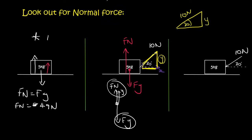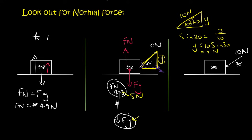We're looking for y. Using SOHCAHTOA, y is opposite and 10 is the hypotenuse, so we use sine. Sin 30 equals y over 10, so y equals 10 sin 30, which is 5 newtons. Gravity is 5 times 9.8, which is 49 newtons. So the normal force would have to be 44 newtons.